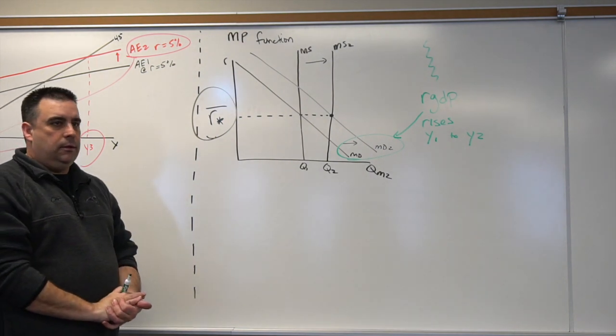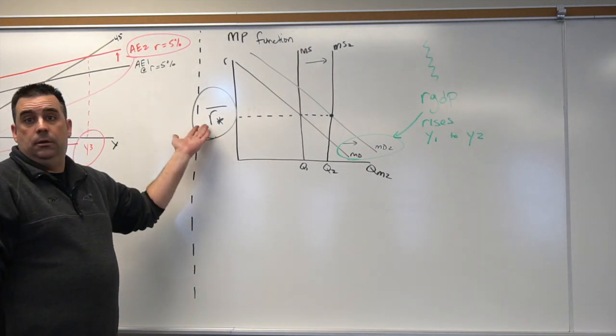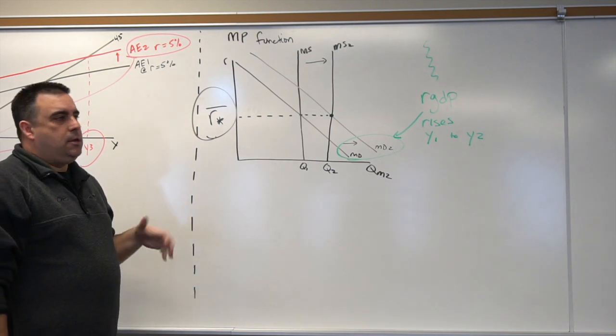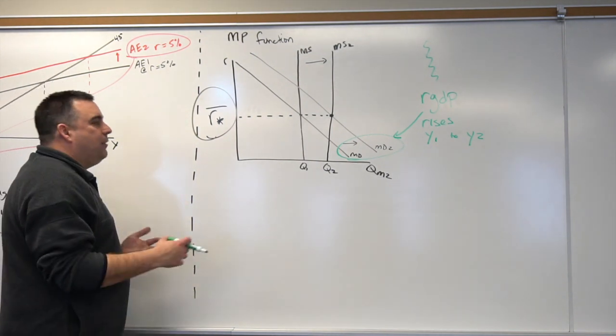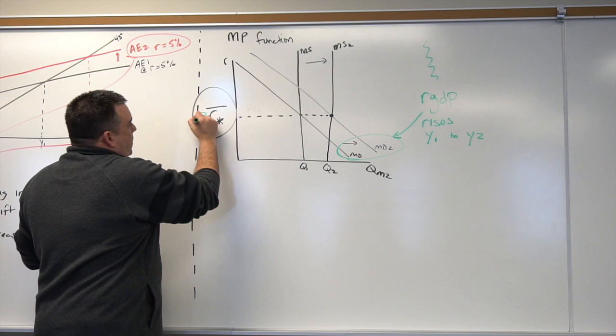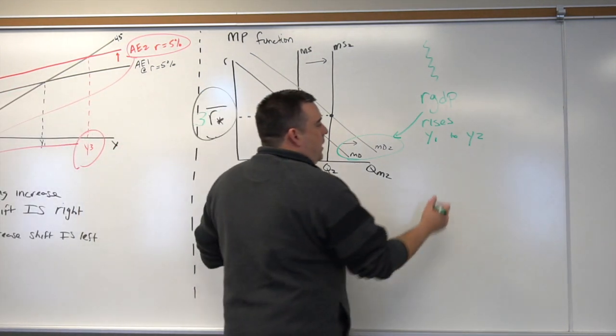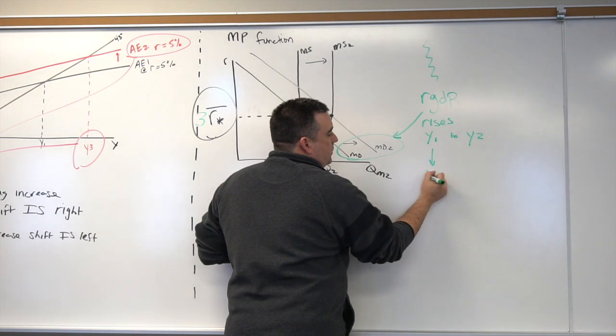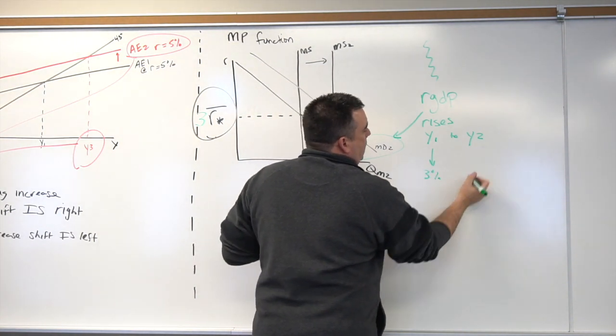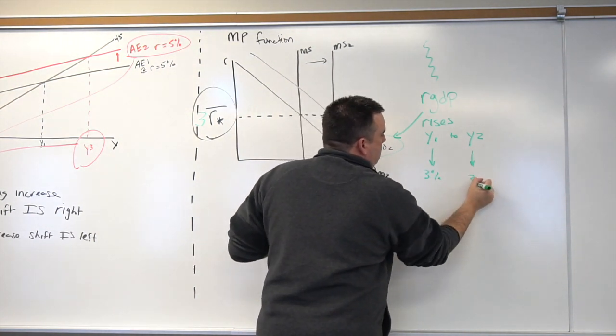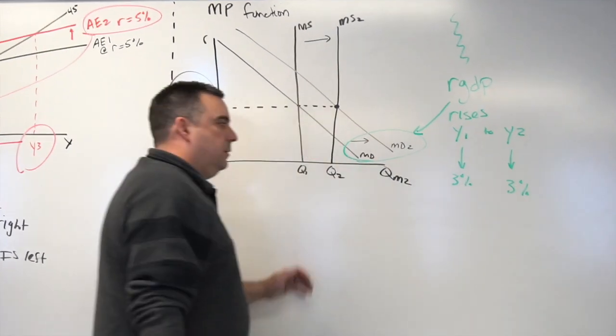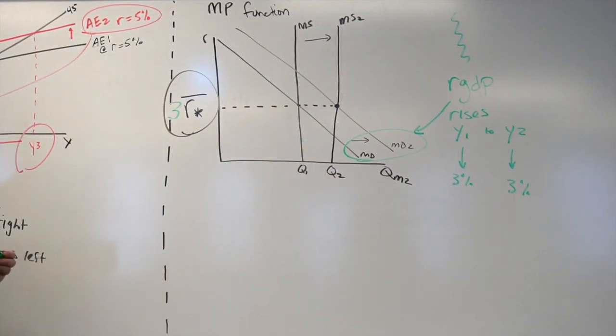What happened to the interest rate? Nothing, stayed constant. So whatever value that is, whatever we want to make up—I don't know, three percent or whatever—the interest rate at Y1 was three percent, the interest rate at Y2 three percent.